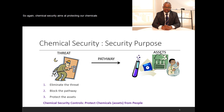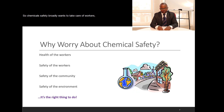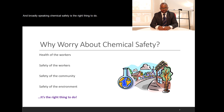Chemical security aims at protecting our chemicals from being accessed by individuals who might have ulterior motives. Chemical safety broadly wants to take care of workers, the community, and the environment. Broadly speaking, chemical safety is the right thing to do.